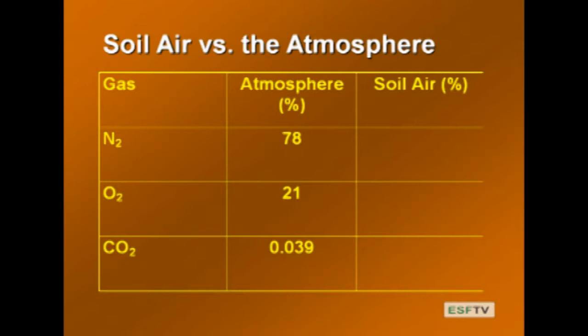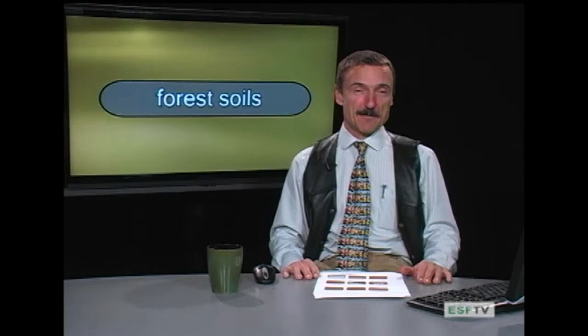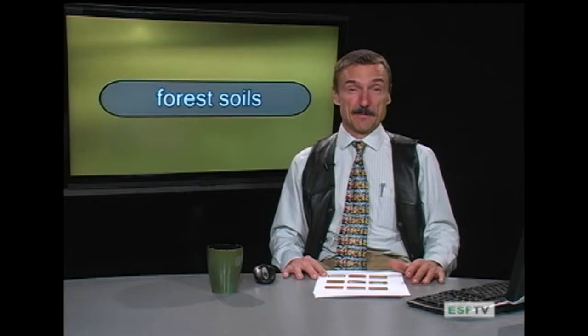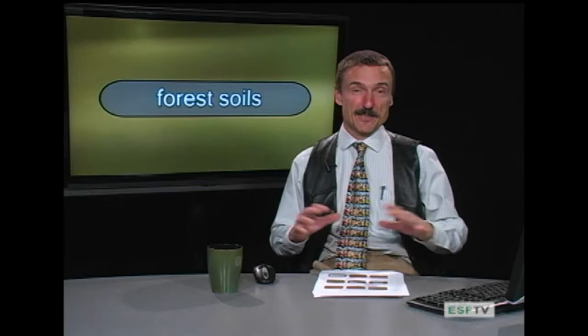That wraps up erosion. We started with water erosion, moved to wind erosion, talked about BMPs, and looked at examples around Heiberg Forest — water bars, road construction problems and solutions. Now we move on to aeration and temperature. As water moves out of the soil, we have air space. Aeration is about the capacity of the soil to exchange air with the atmosphere.